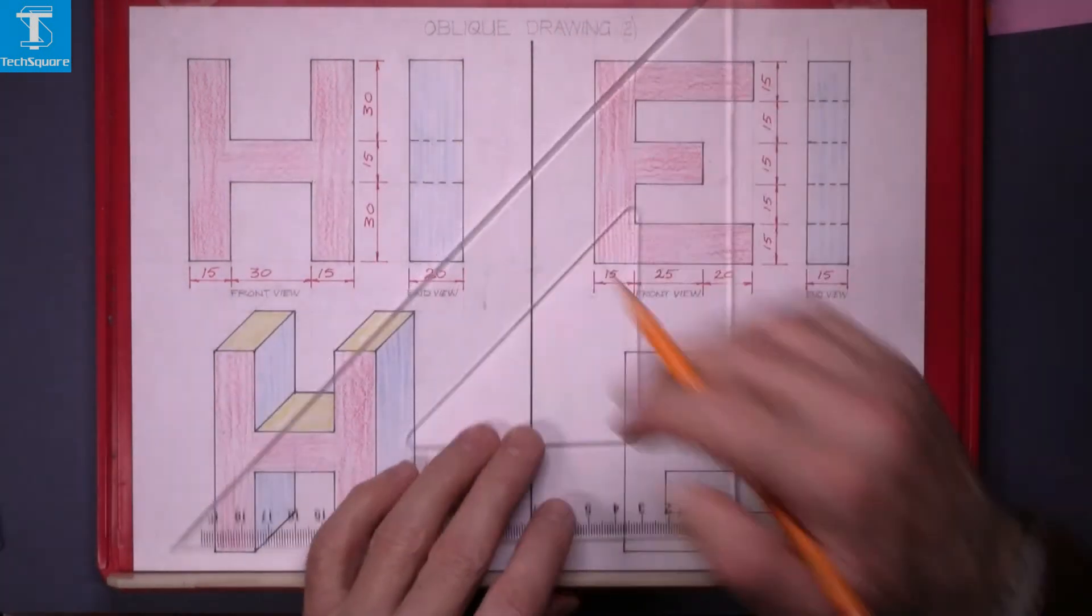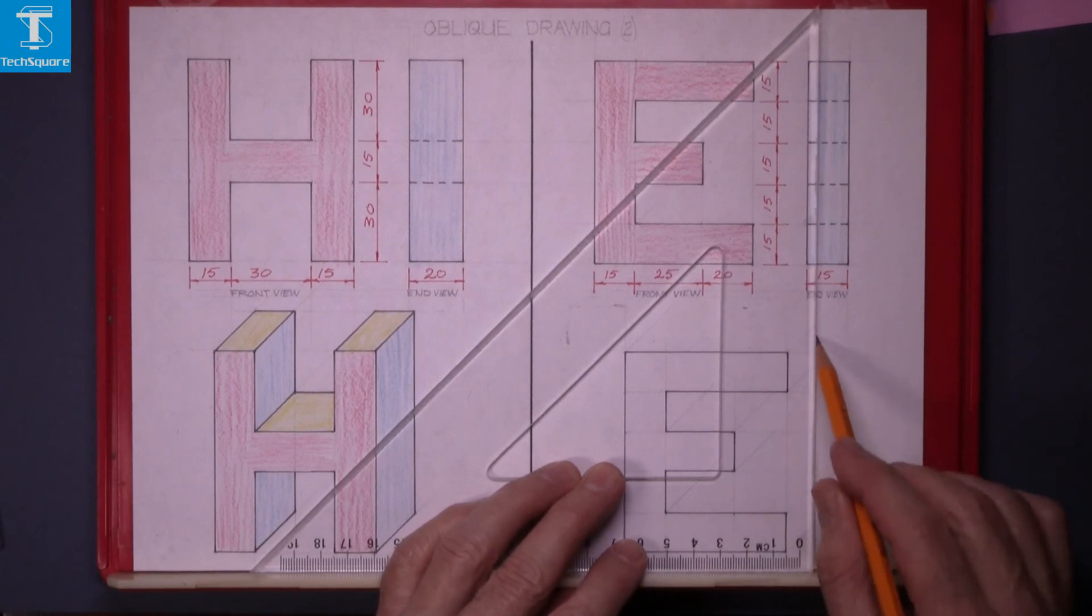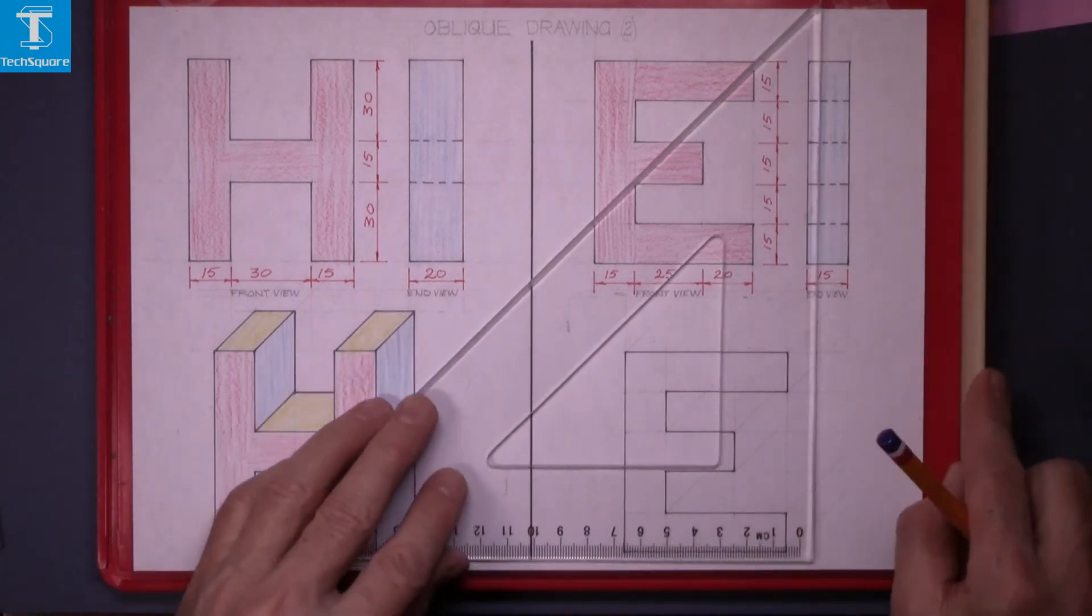And draw that line up along the end of the letter E to the top and across the top then.